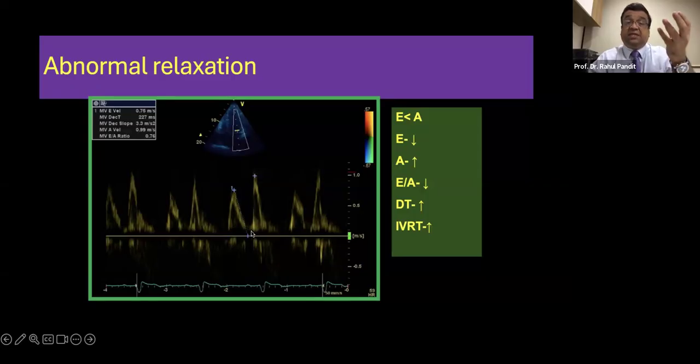Now what happens is that when the E wave finishes off and a phase of diastasis, a small phase of diastasis happens, there is still enough blood with pressure remaining in the left atrium. So when the atrial contraction happens, there is a bigger uptick in the Doppler waveform which you can see as an A wave here. So your E wave now has become shorter. A wave has become taller.